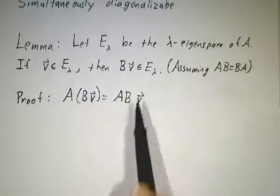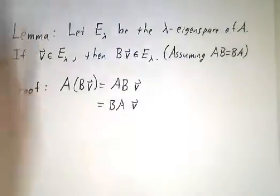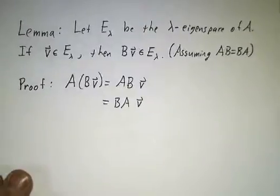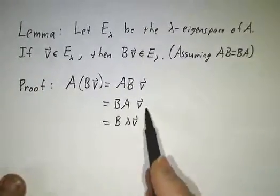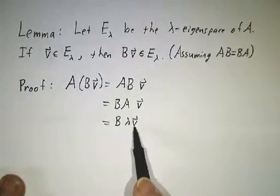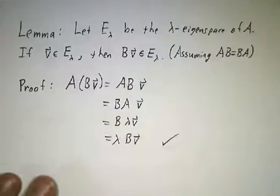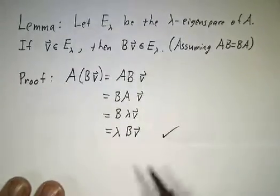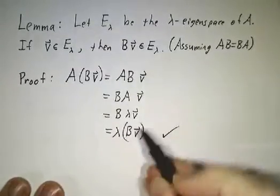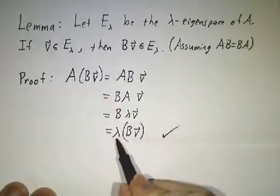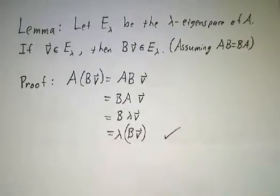Well, that's AB times V. And that's BA times V. And A times V is λV. And you pull the λ out in front and you get λ times BV. So BV is also an eigenvector with eigenvalue λ. That's our lemma.